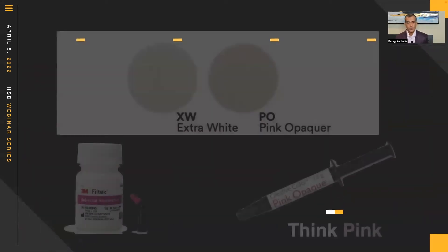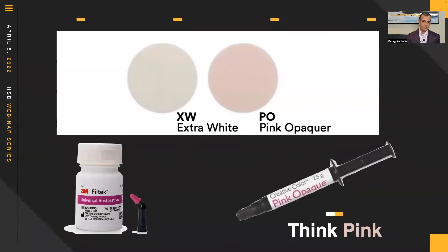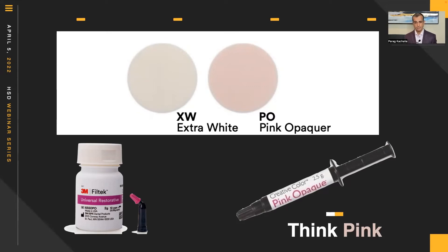One really nice additive within 3M's line is their Filtek Universal Restorative pink opaque. I advocate that if you're not using a pink composite in your practice today, it's something you want to get. It's not a bright pink — it's a very subtle pink with a little opacity. Pink neutralizes gray, so it allows you to block out that grayness from underlying amalgam staining — even for tetracycline cases on anterior teeth — and gives you a nicer base layer before applying your final layer on top.